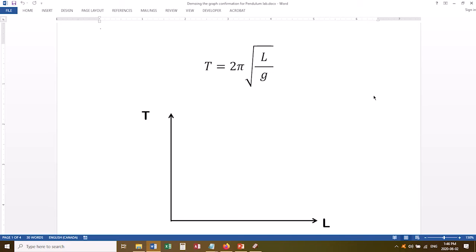There's one problem, and that is that this is not a linear relationship. It's a square root relationship. If you graph T versus L, you're not going to get a straight line on your graph. You should get a line that looks like this.